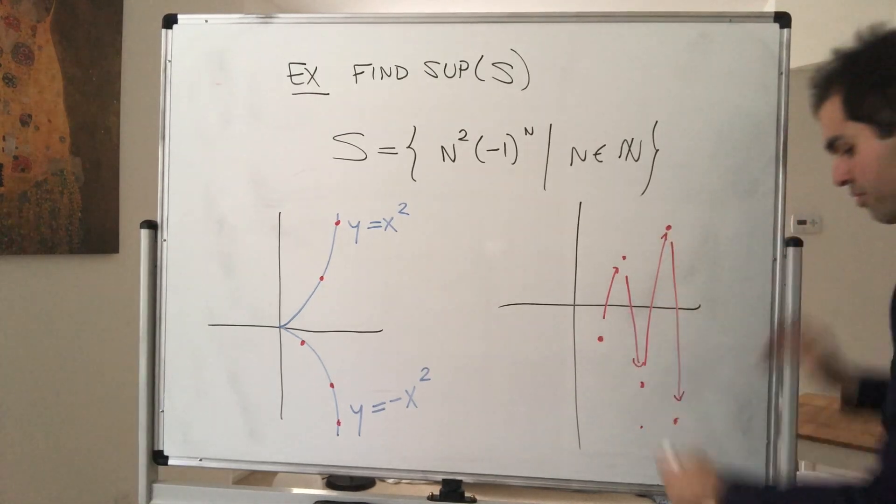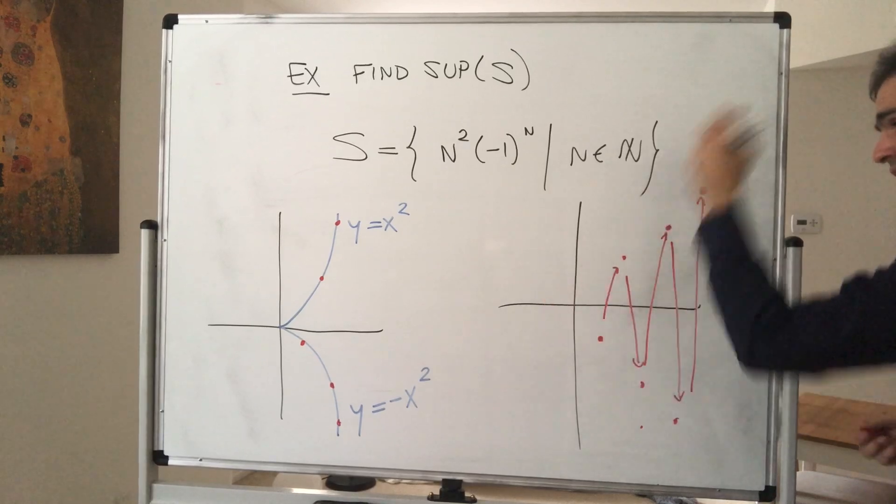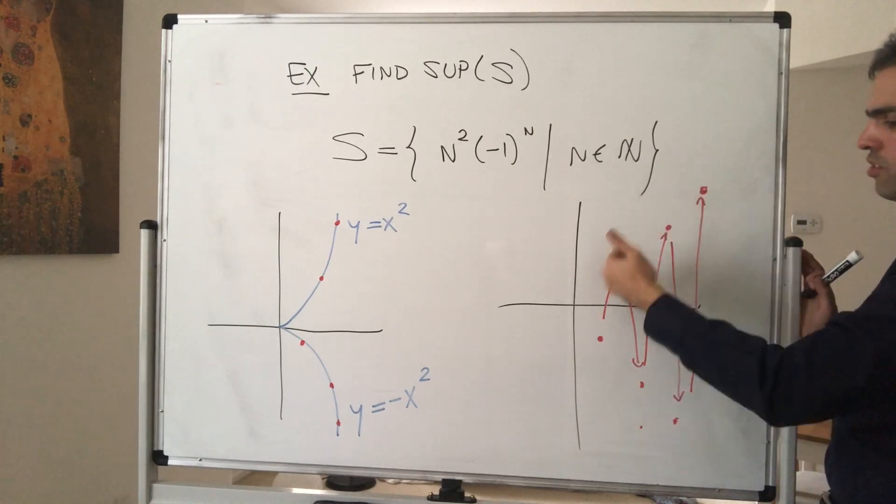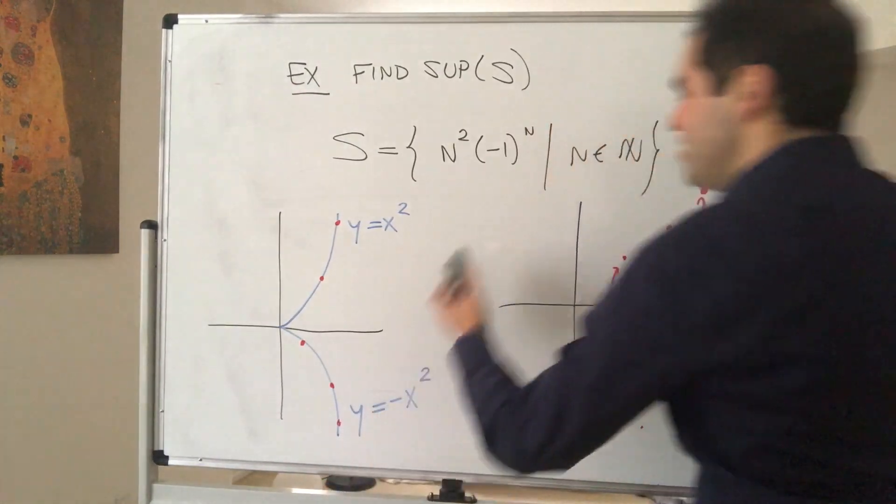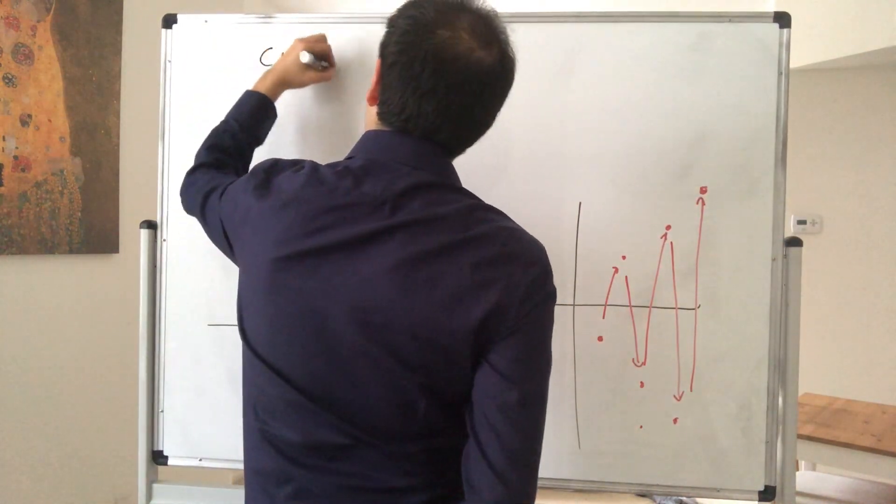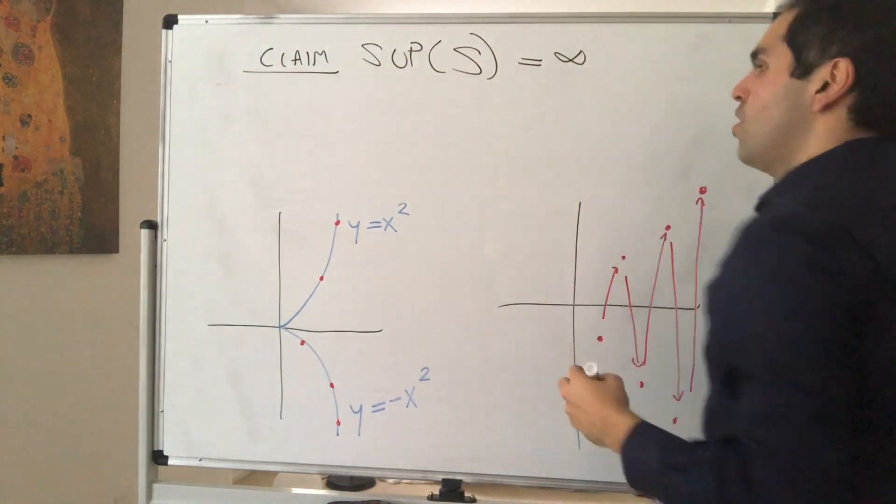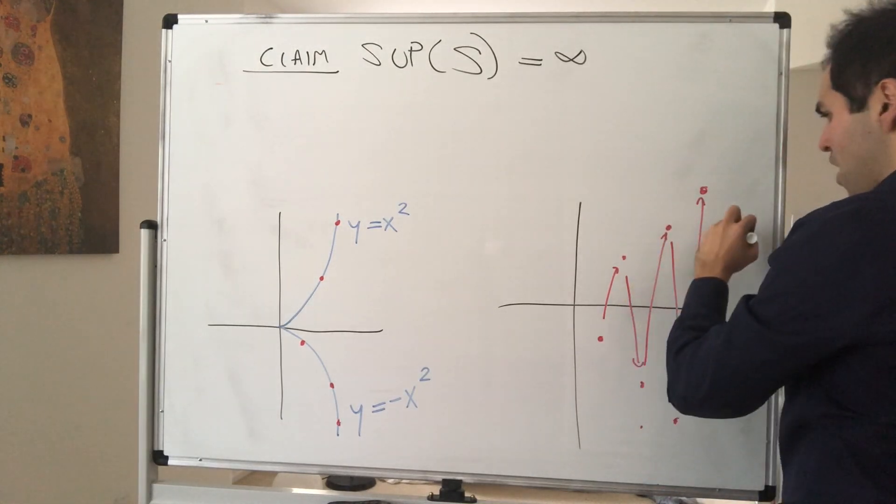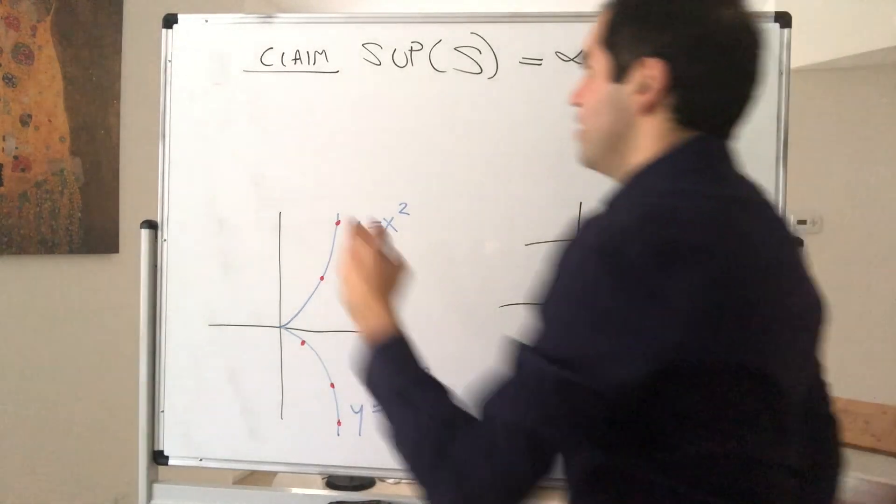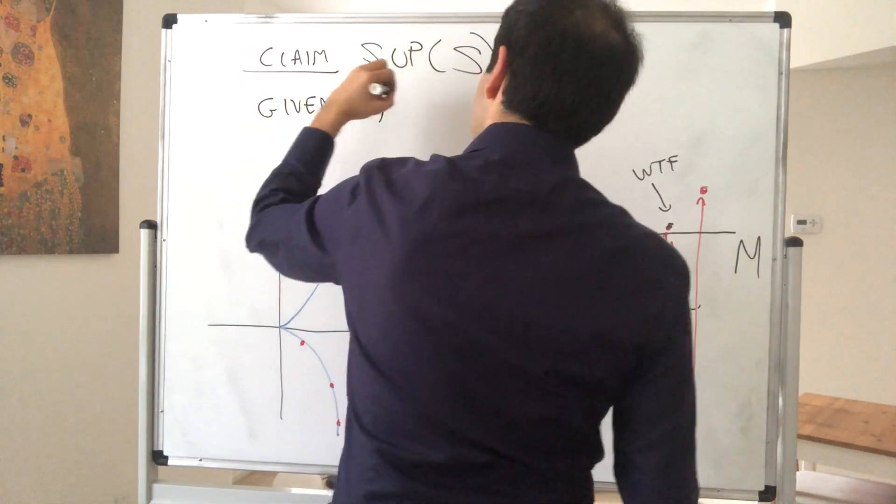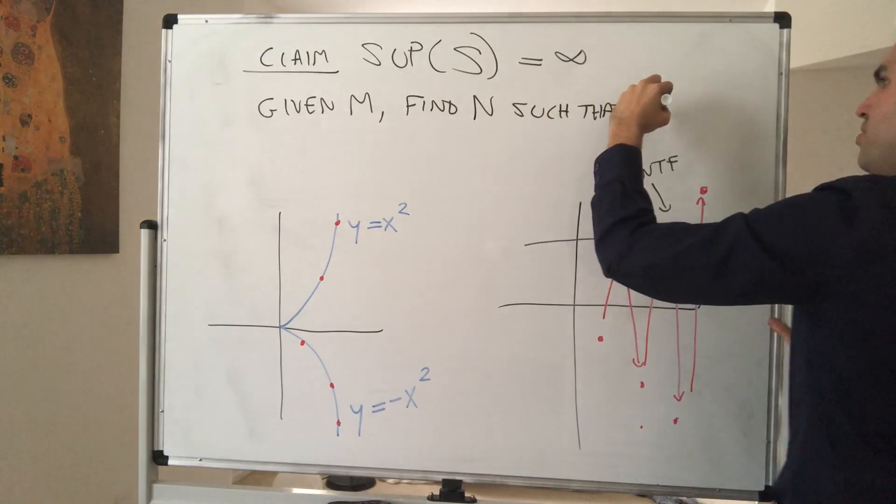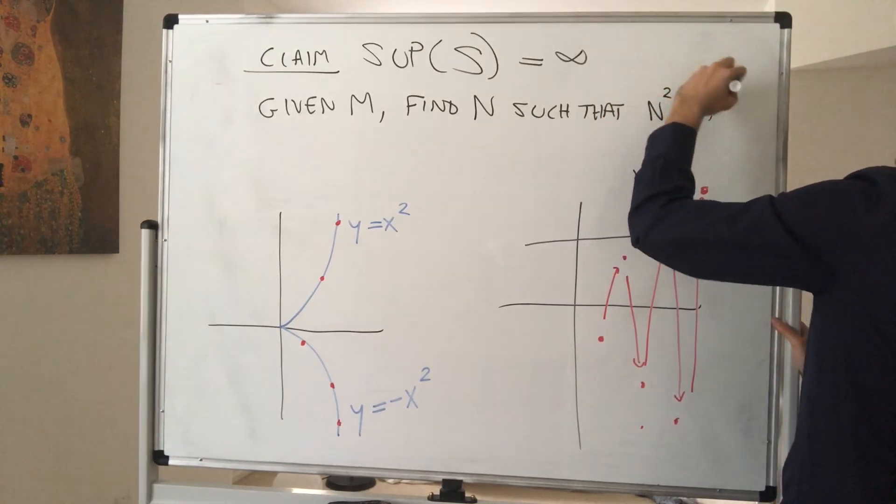And in particular, notice S, if you want the next term here, kind of looks like it's not bounded from above. In other words, it looks like S is just blowing up to infinity. Again, not all the terms, but at least a couple of the terms. So it might be reasonable to guess that the supremum is infinite. So all that we need to do, again, given any number m, what we want to do, we want to find some term of the sequence that is bigger than m. So given m, find something, so find n such that, again, the term of your sequence, n squared times minus 1 to the n is bigger than m.